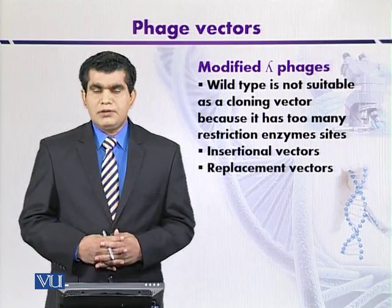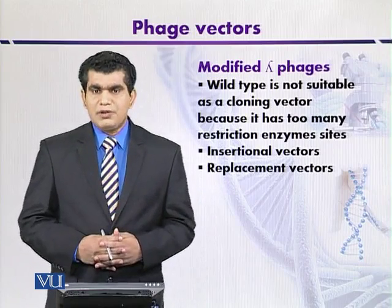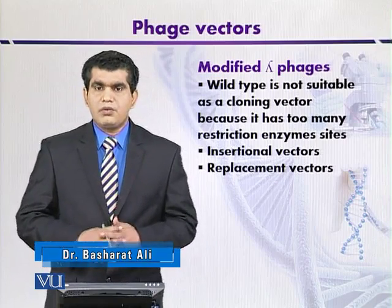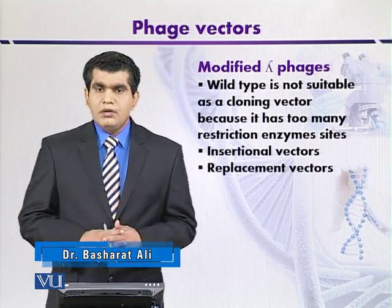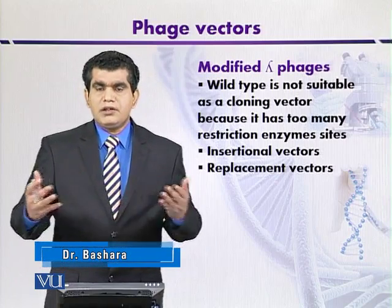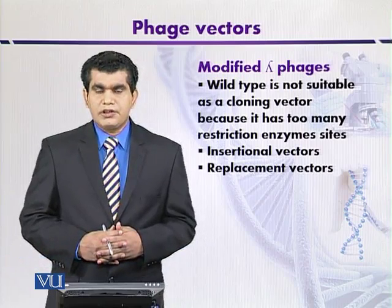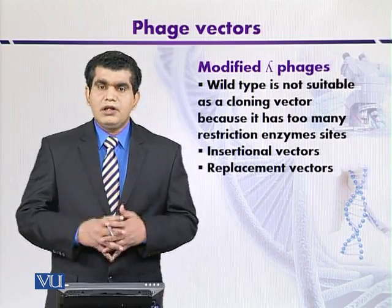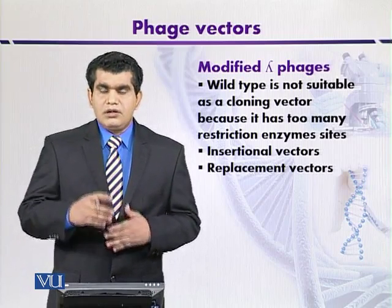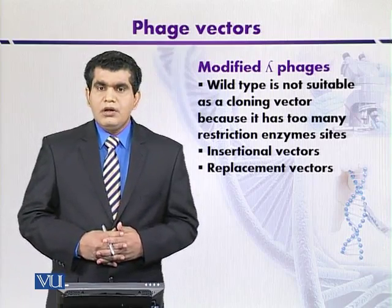Under natural conditions, transducing phage particles are produced that can carry some part of the host genome, and then it can be transferred to another host organism by a process called transduction. So naturally, lambda phages have the ability to be used as cloning vectors.